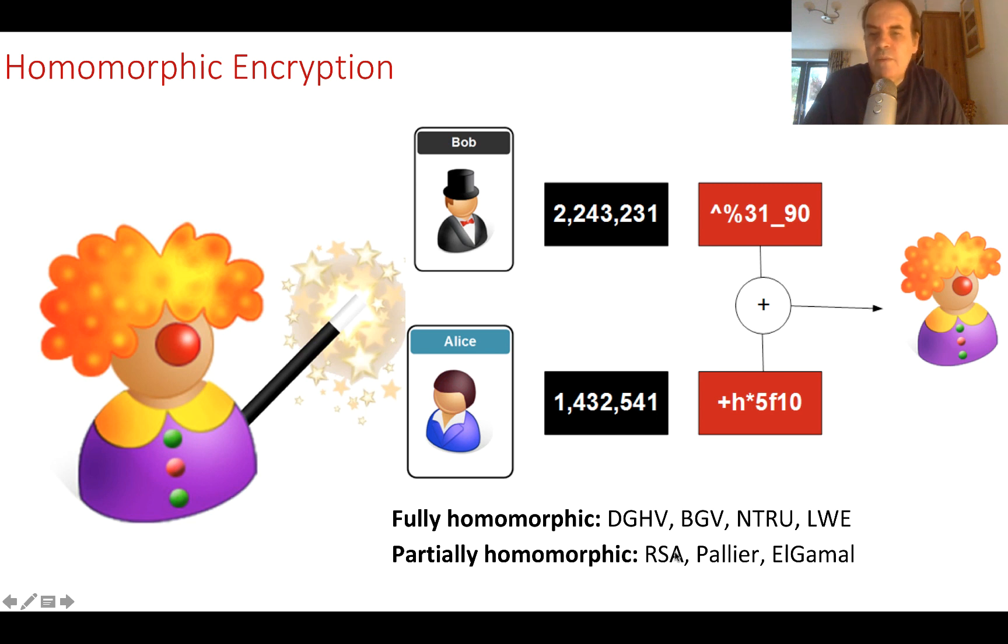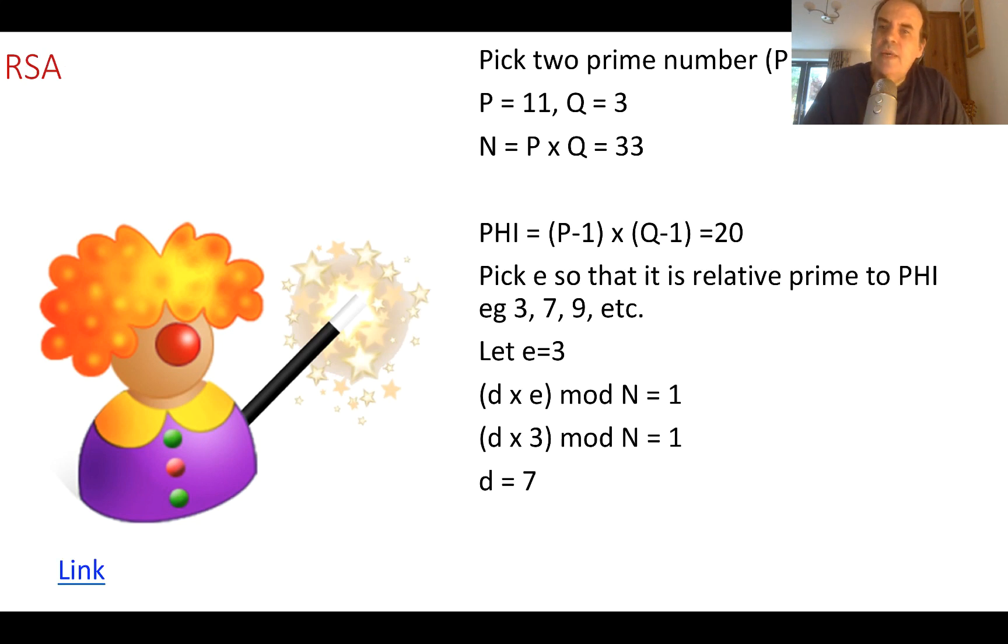Along with this, we have partially homomorphic encryption, as we'll see RSA, Paillier, and ElGamal. So let's quickly cover the RSA method.